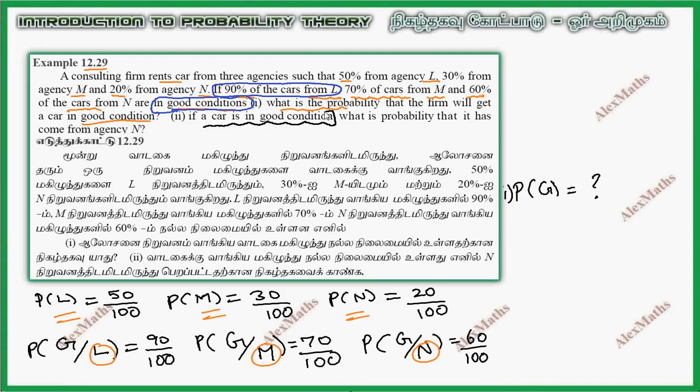Second, if a car is in good condition, what is the probability that it came from agency N? So P of N given G.